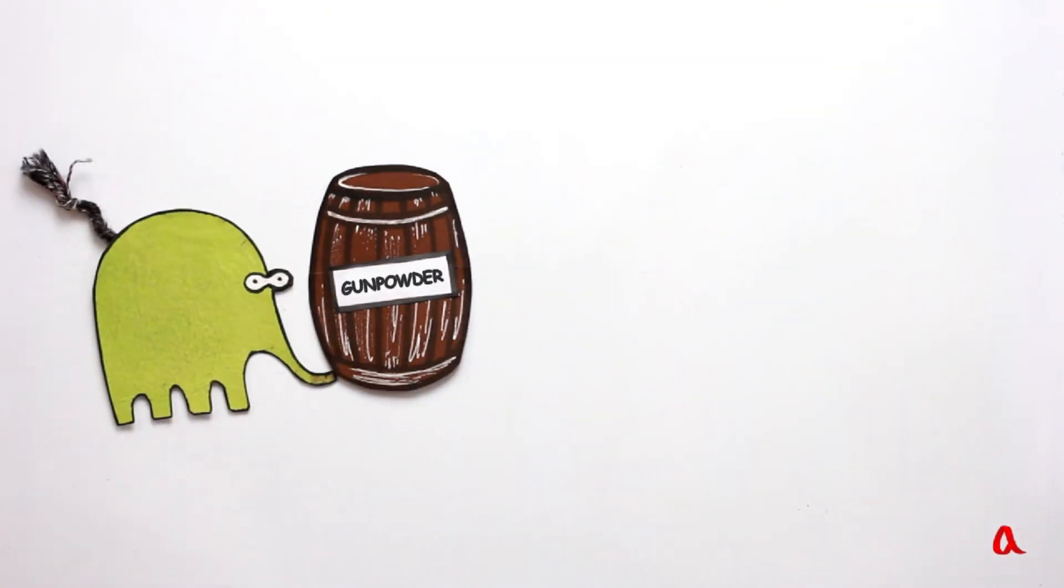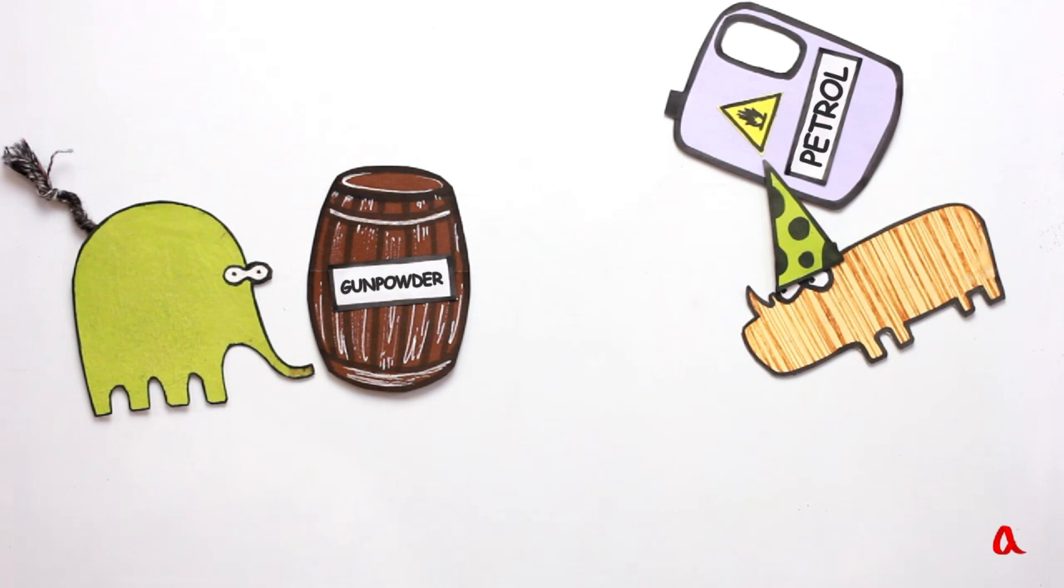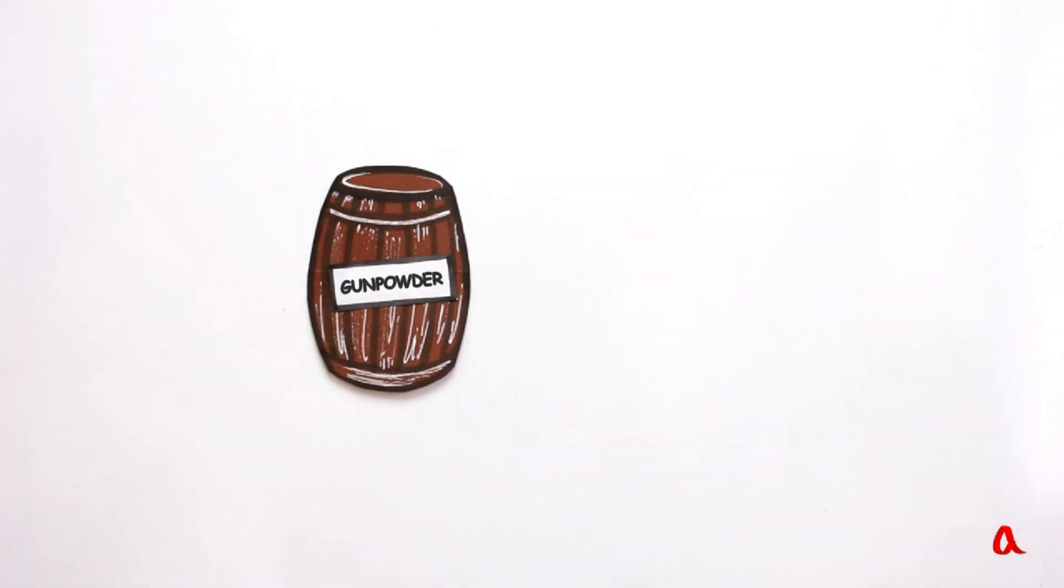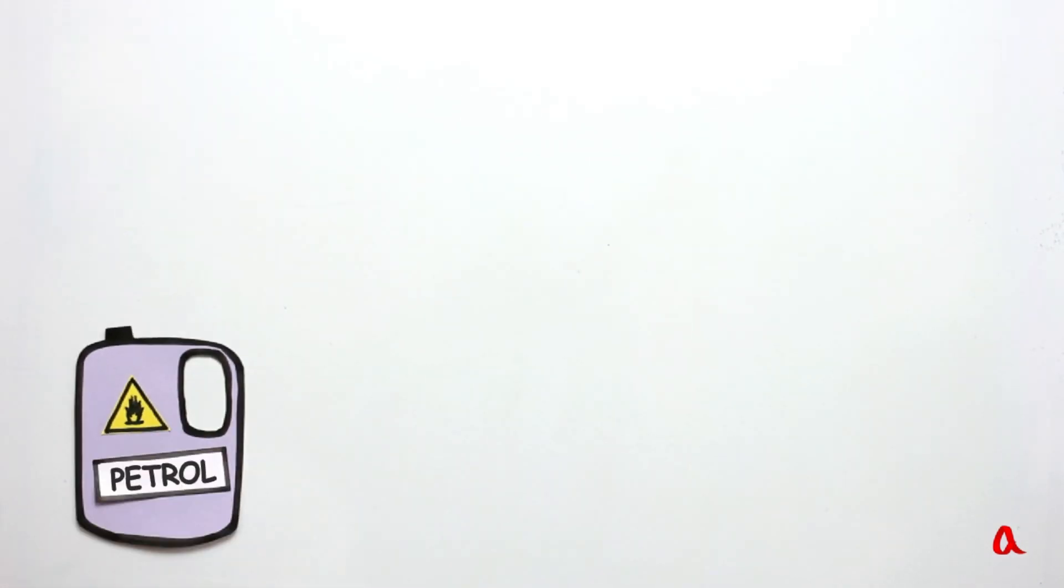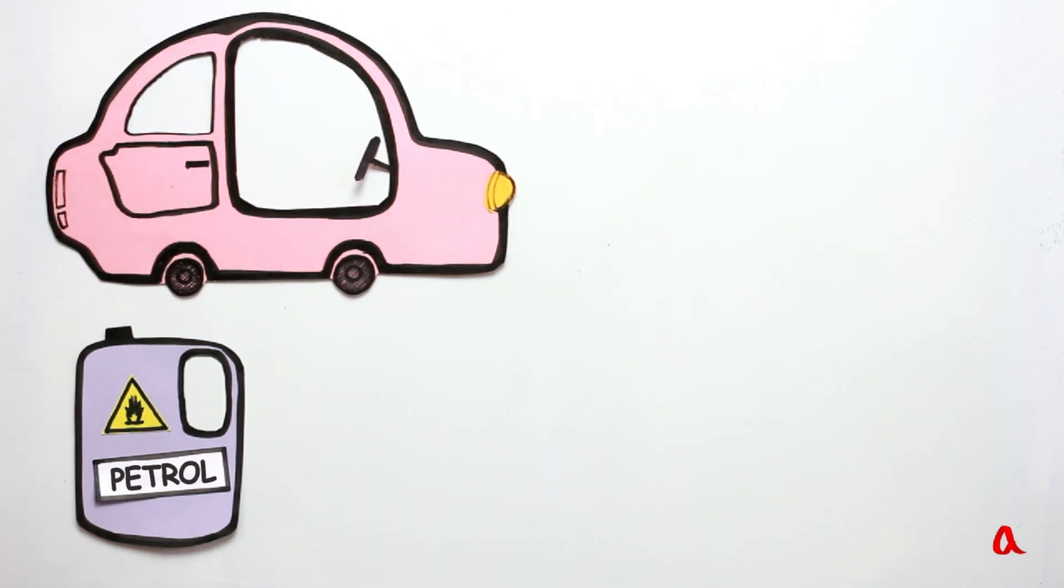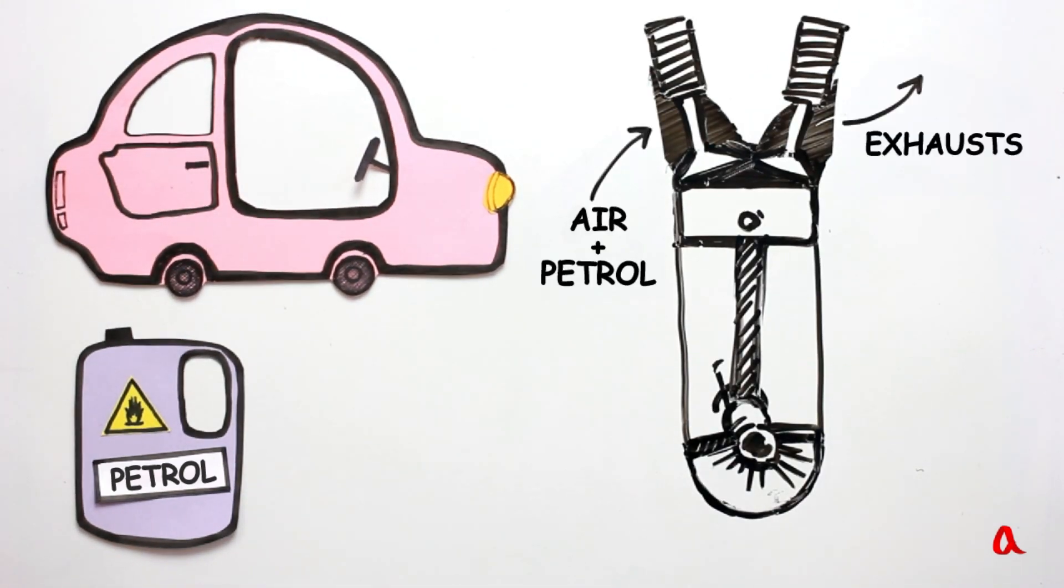Stored energy is also present in any fuel, gunpowder or petrol. Gunpowder burns down, combustion gases get out of the engine's nozzle and accelerate the rocket. Petrol burns inside car engine cylinders and pushes at the pistons.